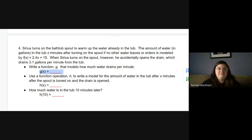Now you have a function. Use a function operation. We're going to write a new function H, which is going to be some sort of operation on F and G. The tub filling and the tub draining. A new function H to model the amount of water in the tub after x minutes, after the spout is turned on and the drain is opened. So that's where we're going to have to use F and G.